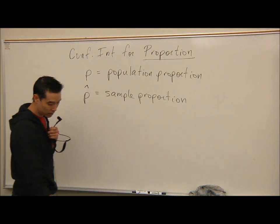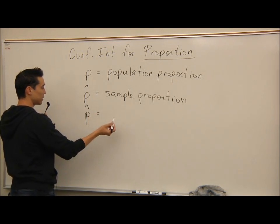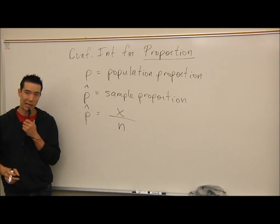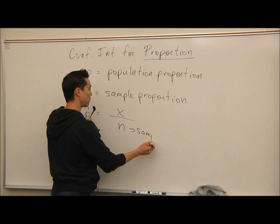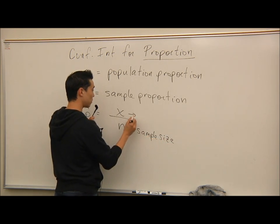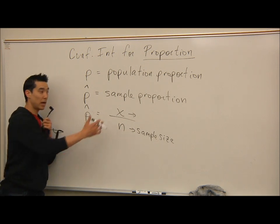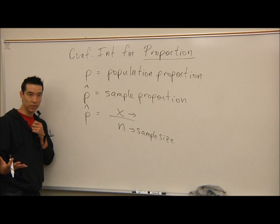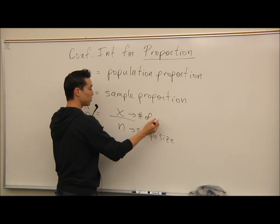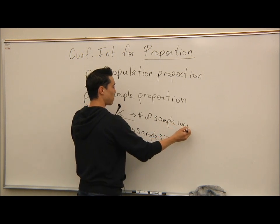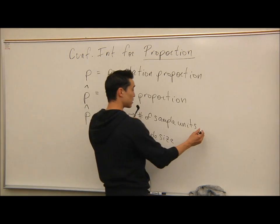When you're figuring out your sample proportion P hat, it's x over n. n is the size of your sample. x, for instance, if I have a class of 30 students and four are left-handed, x would represent four, the number of students that have the characteristic of interest. So x is the number of sample units that have the characteristic of interest, whatever that characteristic is.